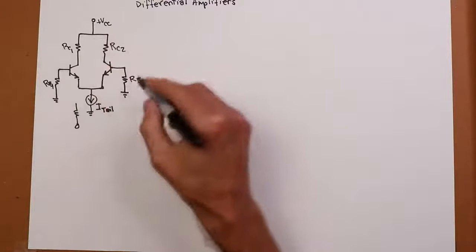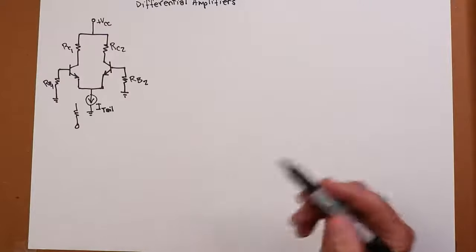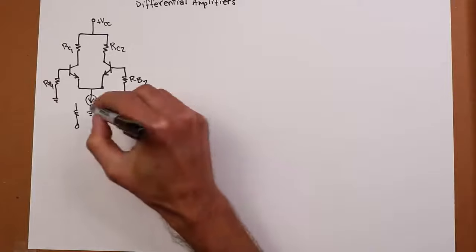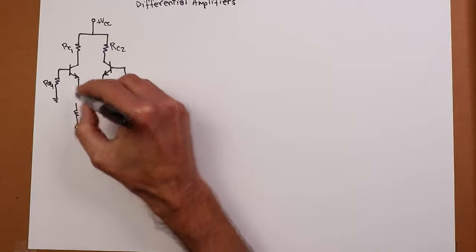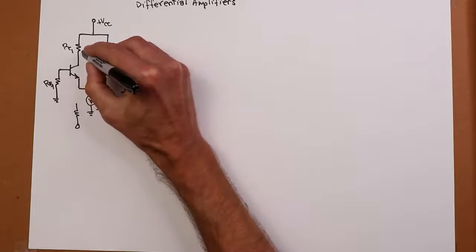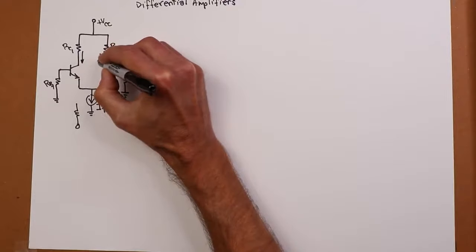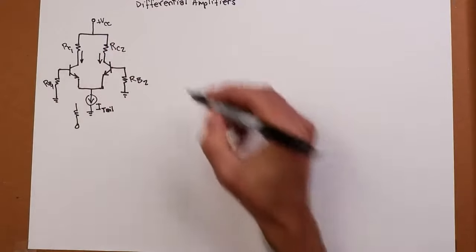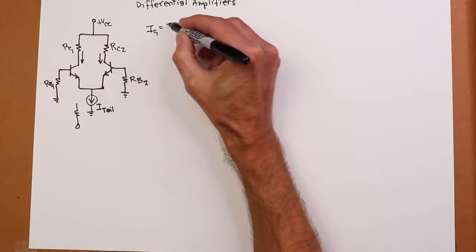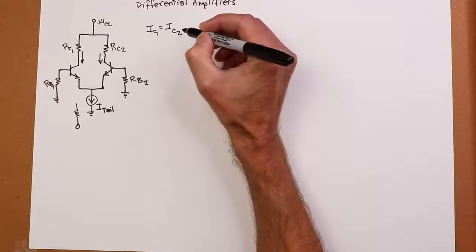If everything is perfectly matched, and this is key, if everything is perfectly matched, this current, this tail current, will split evenly between the two halves. So in other words, the current coming down through transistor 1 will be identical to that of transistor 2. So IC1 equals IC2. Now if that's the case, then all the voltage drops,